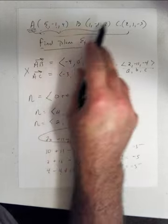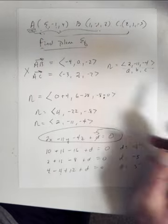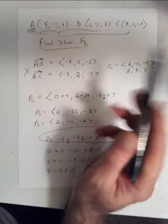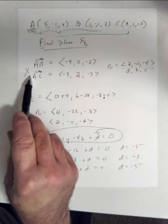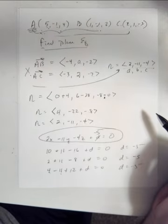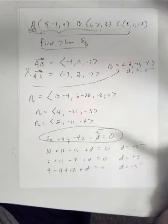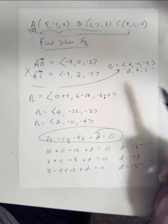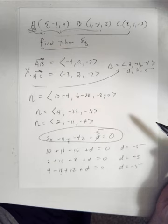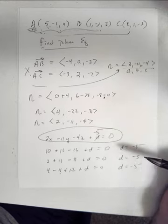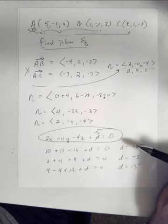To summarize the process given three points: pick one as your initial, translate to the origin to get two vectors, calculate the cross product to get the normal vector, reduce it if you can since any scalar of the normal is also perpendicular to the plane, then plug in any of the three points to find D. Pretty straightforward.